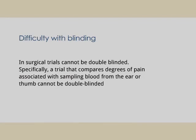In some situations blinding is very difficult. For example, in surgical trials double blinding cannot be performed. Specifically, a trial comparing the design of pain associated with sampling of blood from the ear or thumb cannot be double blinded. In specific disease conditions or surgical procedures, blinding cannot be applied.